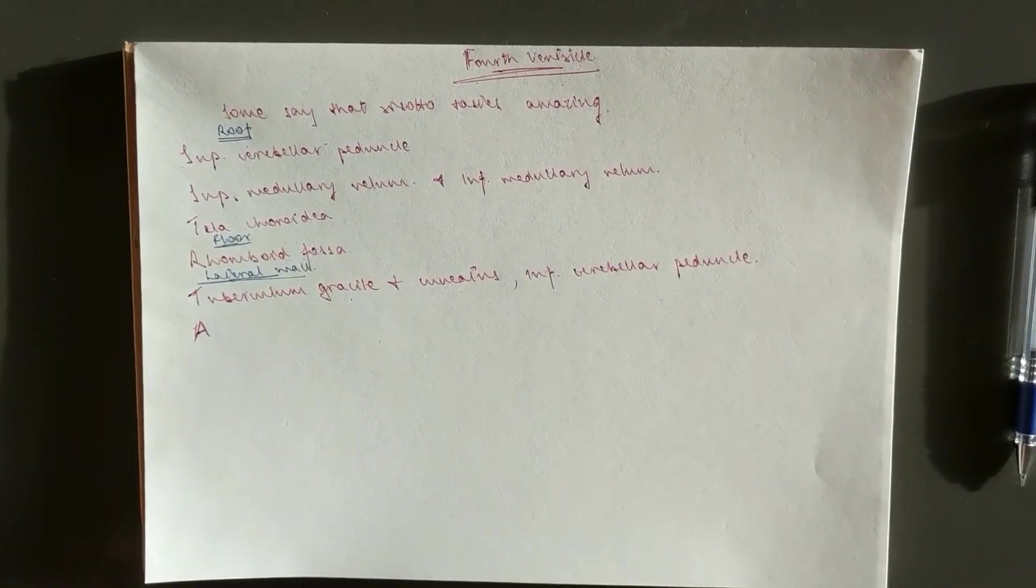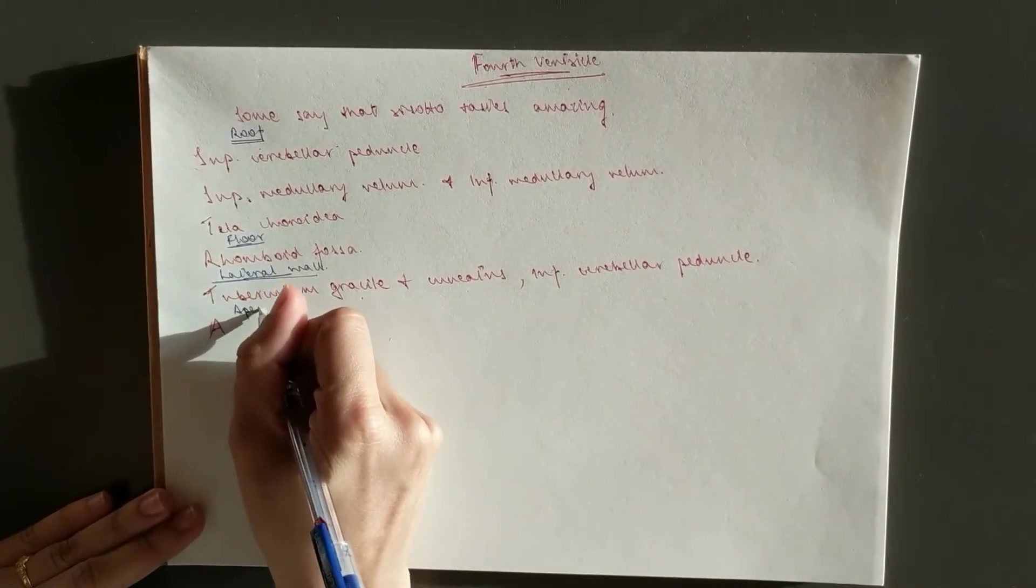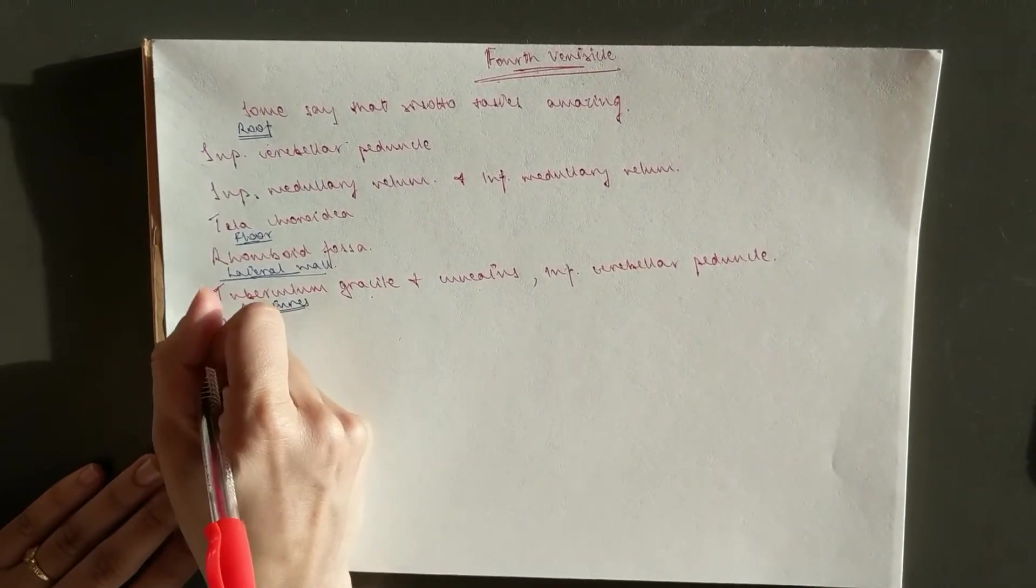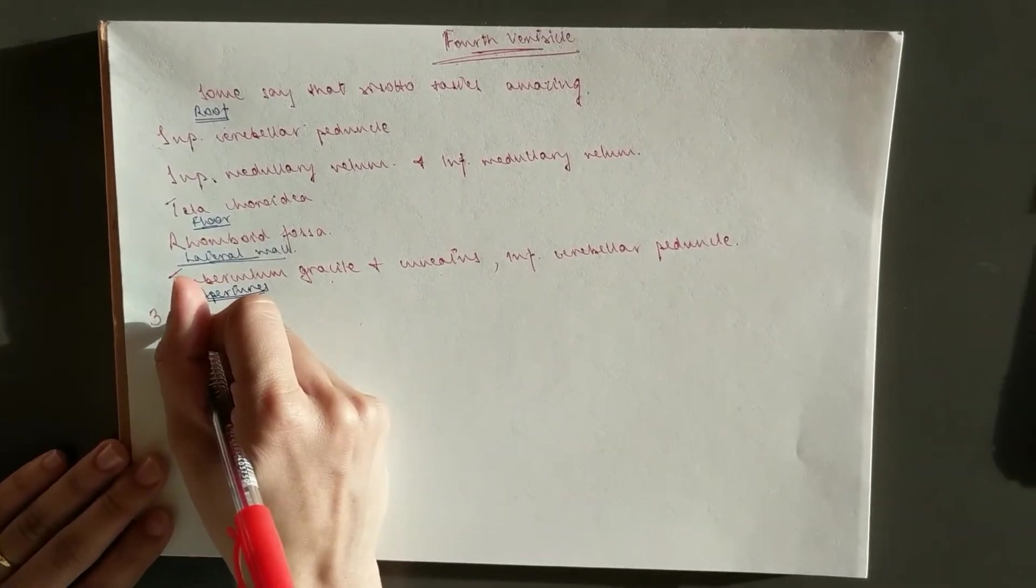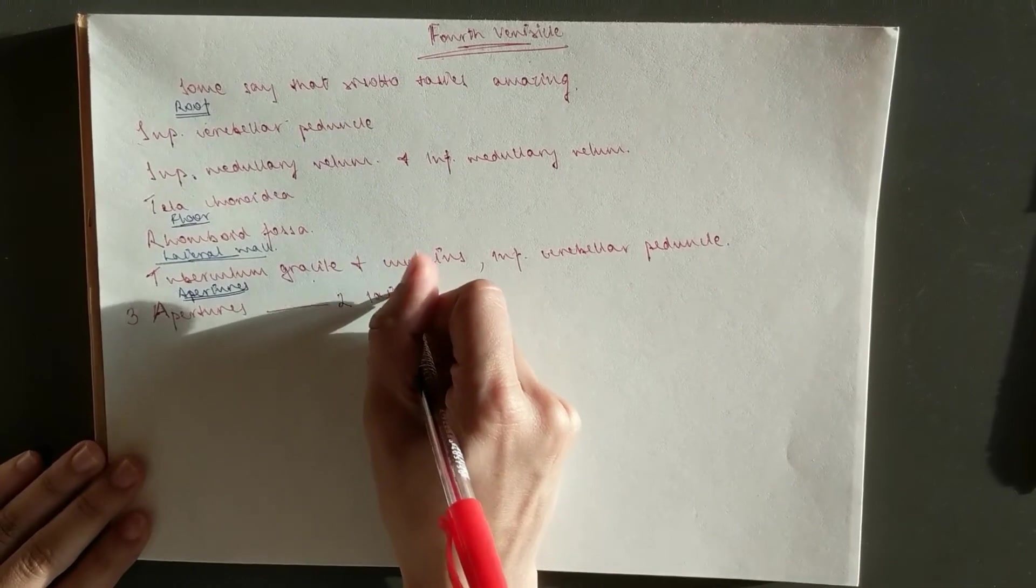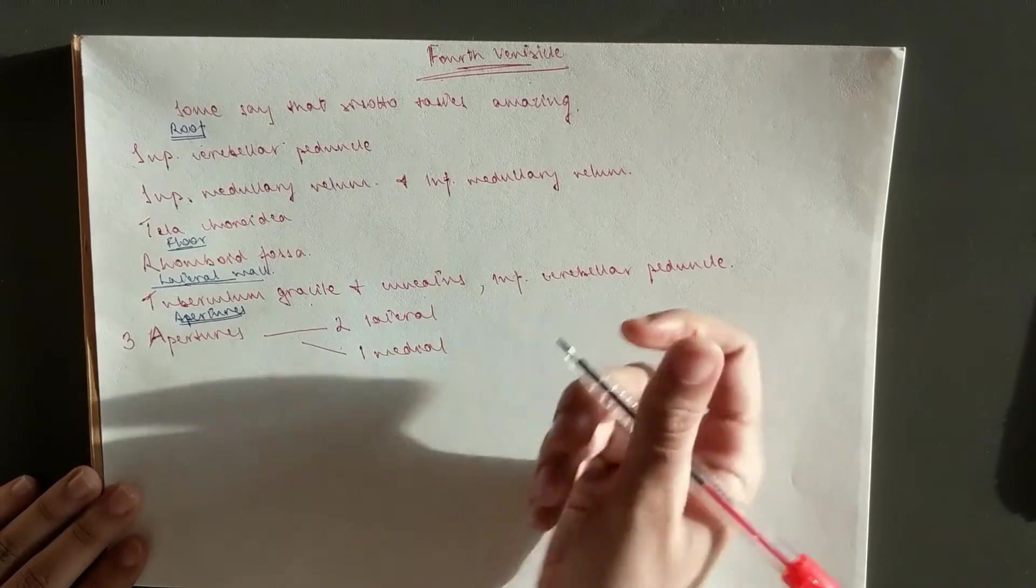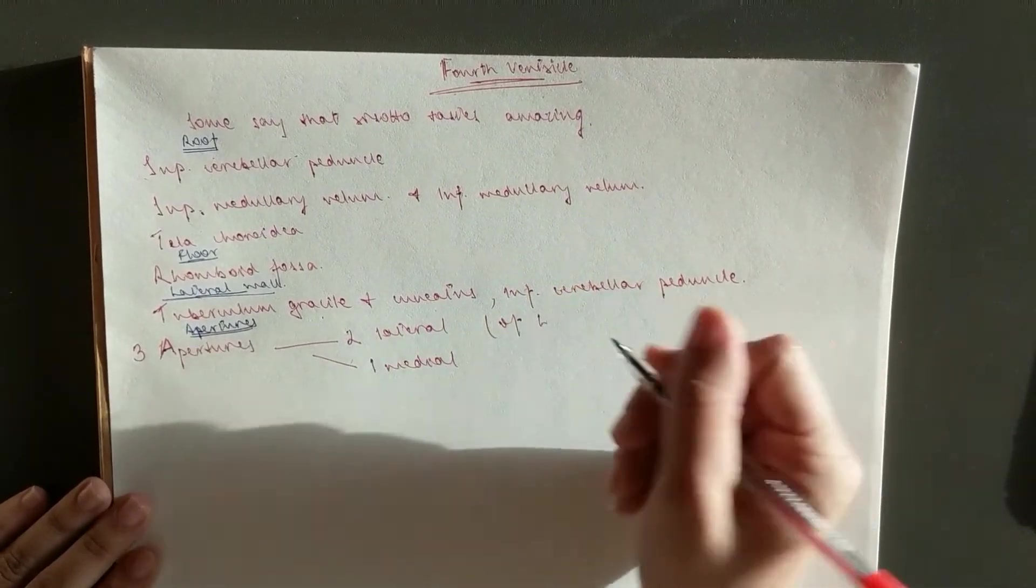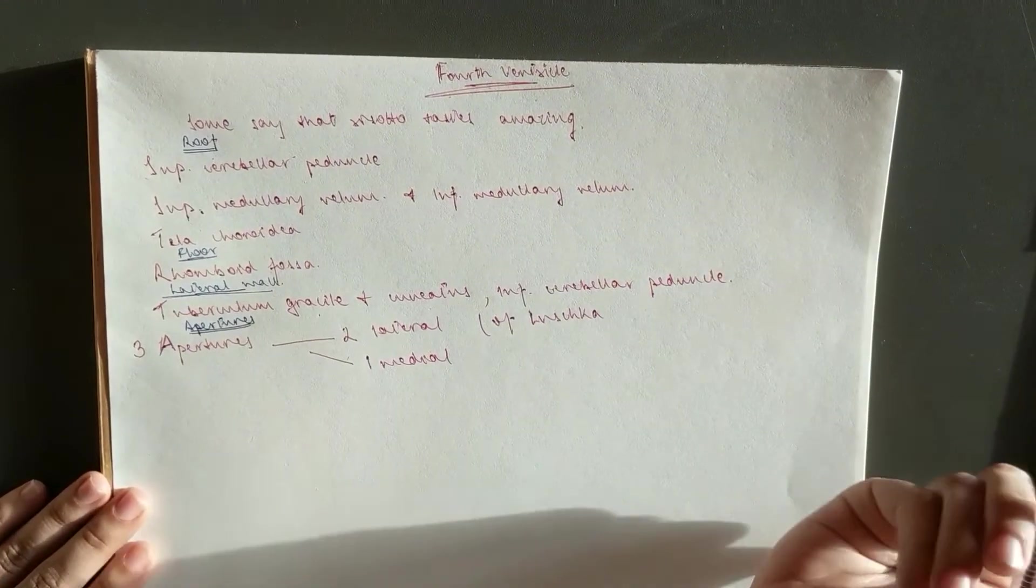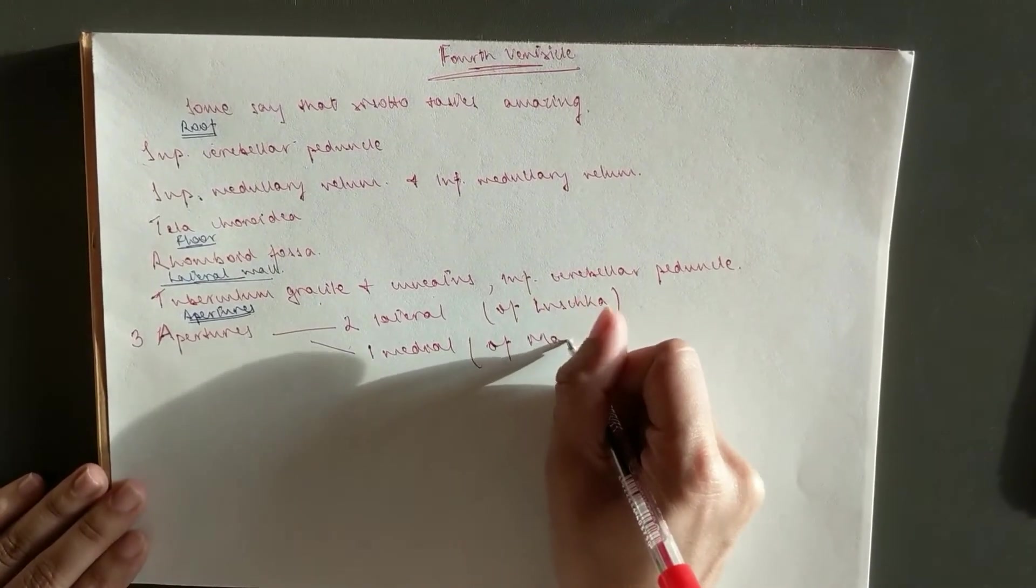There goes the borders. And one more thing you need to know is the apertures. So you've got three. A stands for apertures. So you've got three. You've got two lateral ones and one medial. The lateral aperture is named the aperture of Luchka, and the medial one is of Megendi.